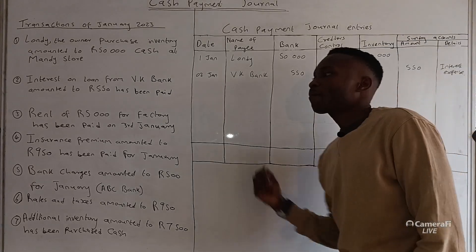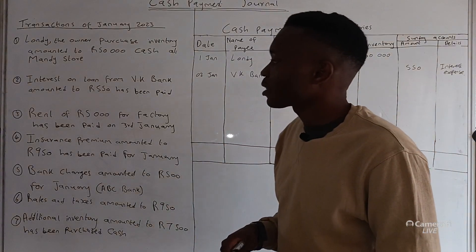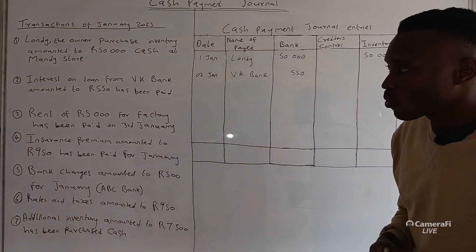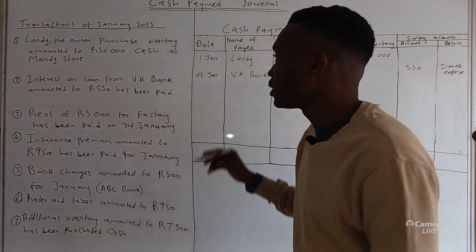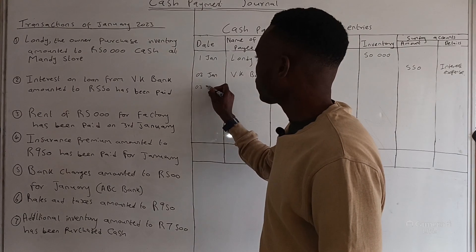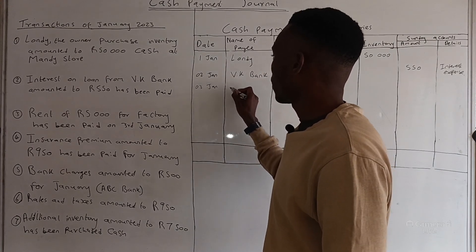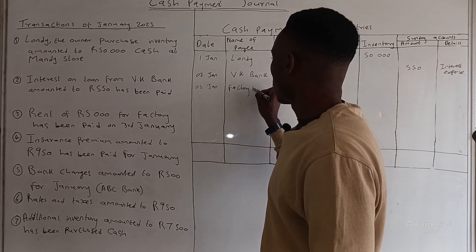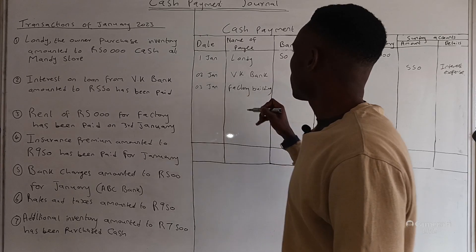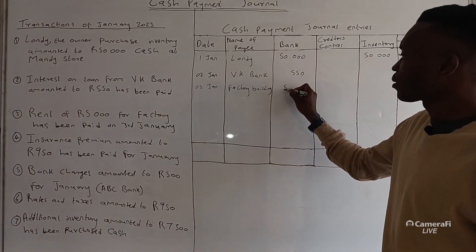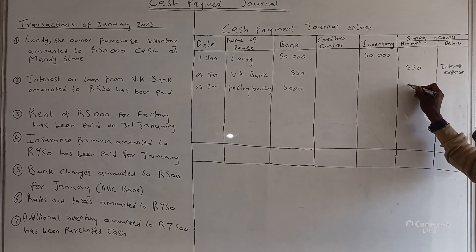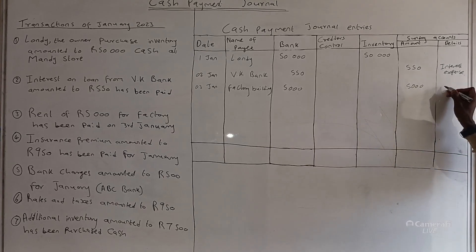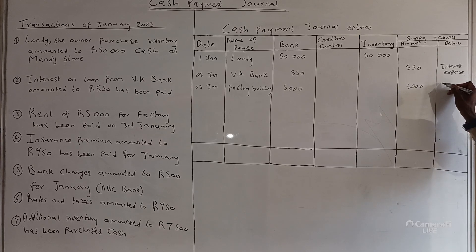Transaction three: rent of 5,000 for the factory building has been paid on 3 January. The date is 3 January and the name of payee is the factory building. The amount is 5,000. It does not fall under creditors control and it does not fall under inventory, so it goes to the sundry account for 5,000. On the detail side we write rent expense.